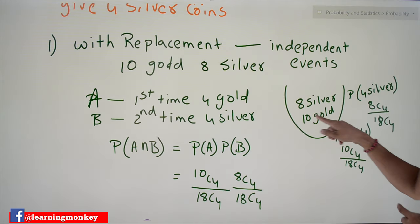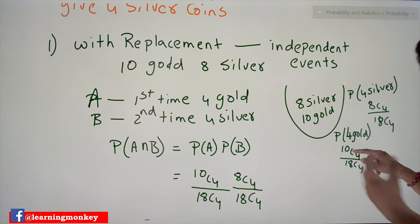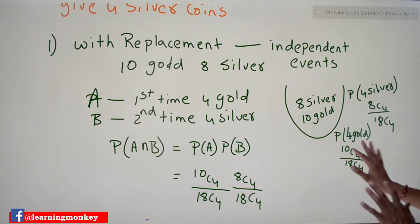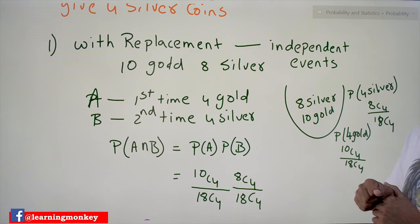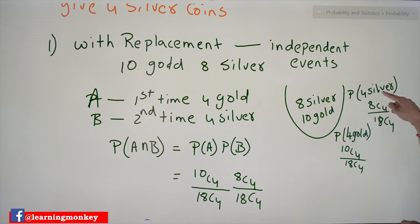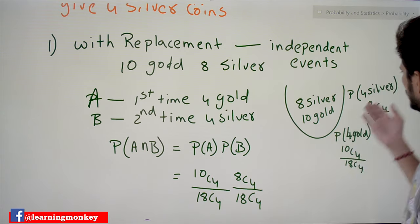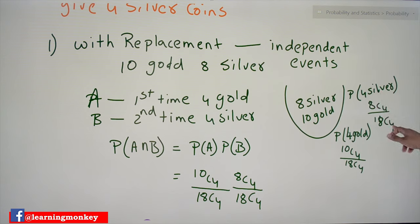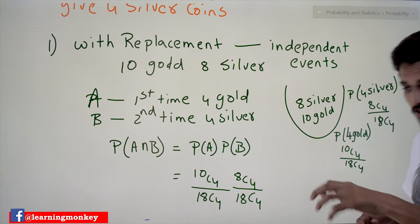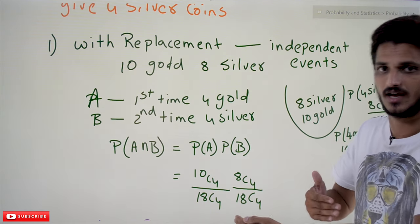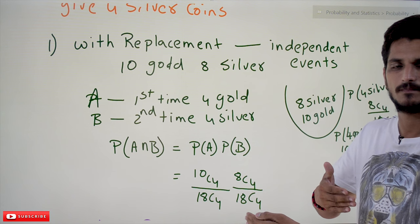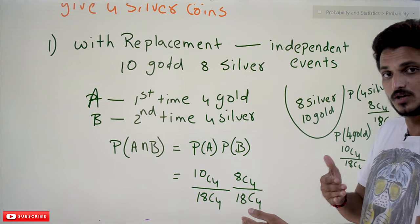The probability of selecting four gold coins is 10C4 divided by 18C4. The probability of selecting four silver coins the first time is 8C4 divided by 18C4. If you replace the coins back, the second time has the same probability values — 8C4 by 18C4 for silver and 10C4 by 18C4 for gold — because we are replacing the coins. The first event is not affecting the second event, so they are independent events.